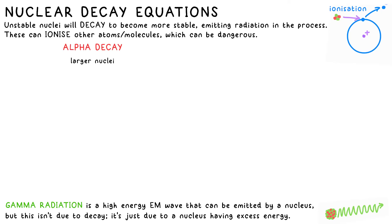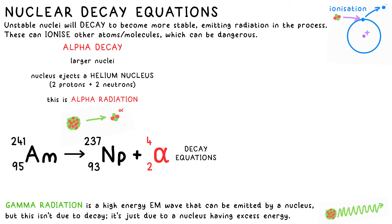Heavier nuclei, like americium-241, decay by what we call alpha decay. To become more stable, the nucleus will emit a bundle of two protons and two neutrons. What we can just call an alpha particle. This is alpha radiation. This is what the nuclear decay equation would look like for this.